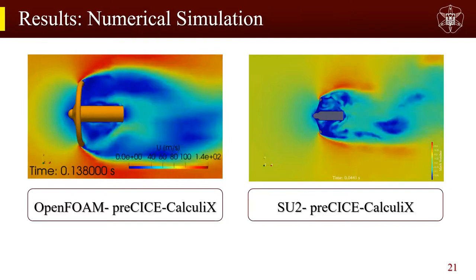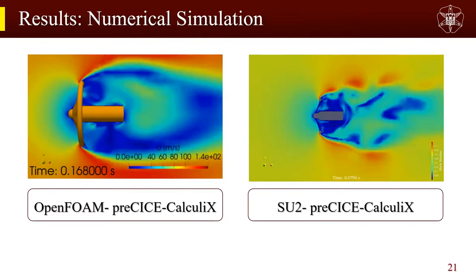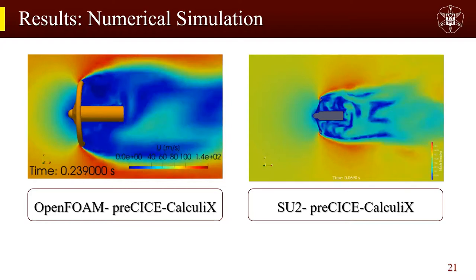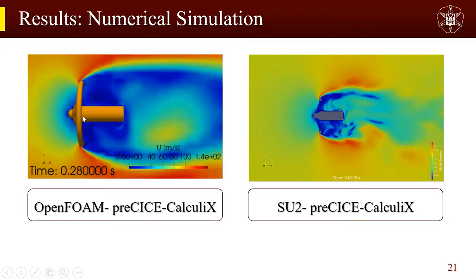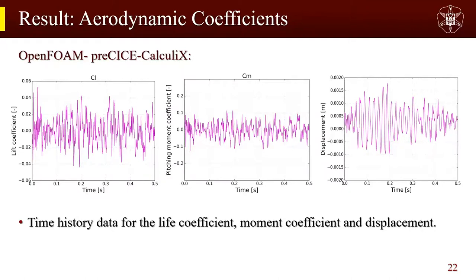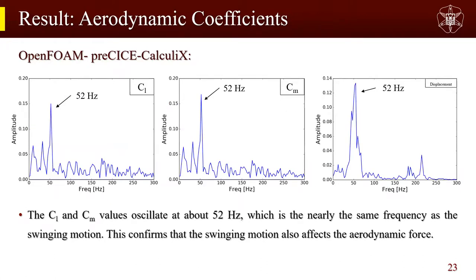Here you can see the FSI analysis result from the two models mentioned. The oscillation is well captured by the OpenFOAM–preCICE–CalculiX model; the simulation results show the oscillation of the aeroshell. Time history data for the lift and moment coefficients as well as displacement show fluctuating behavior. The CL and CM values oscillate at about 52 Hz, which is nearly the same frequency as the swinging motion, confirming that the swing motion also affects the aerodynamic forces.